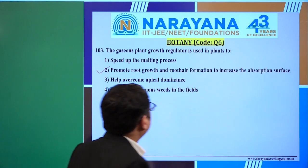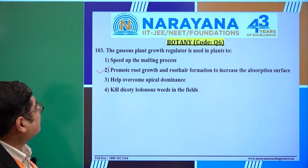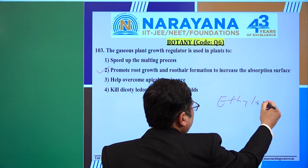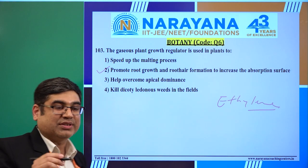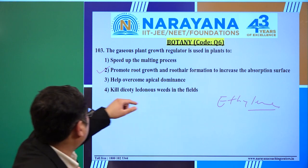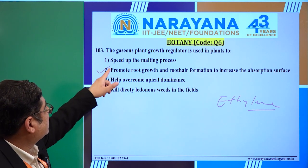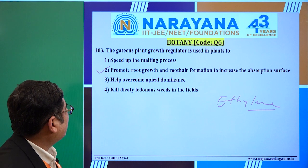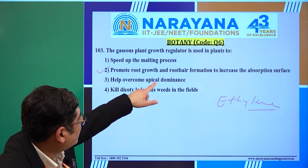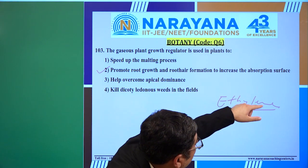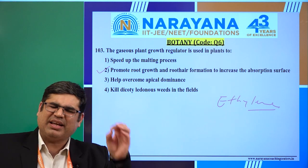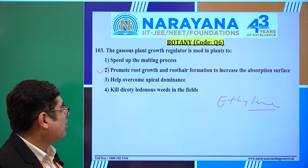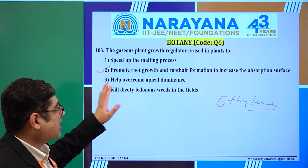We are moving ahead to question number 103. The question is asking about Q6 as a plant growth regulator, and they are asking about ethylene. We know it as a plant growth hormone. Looking at the four options one by one: the first option — speeds up maturity of muscles — no, not at all. The second option — promotes root and root hair formation to increase the absorption surface — this is absolutely from the NCERT syllabus, so the second option appears correct.